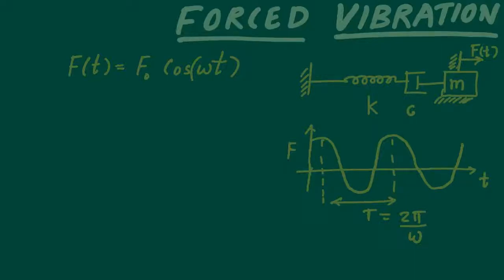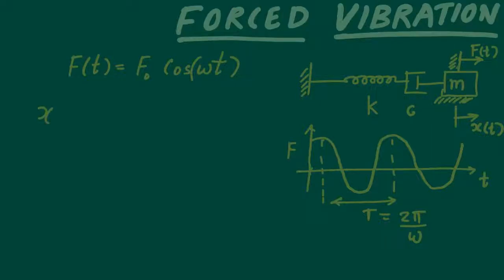Now, the key assumption we make when computing the response of the system against this harmonic excitation is that since the excitation force has frequency ω, we assume the response will also have the same frequency ω. So we assume a functional form: x(t) = c₁ sin(ωt) + c₂ cos(ωt), meaning the system vibrates with the same frequency as the excitation.